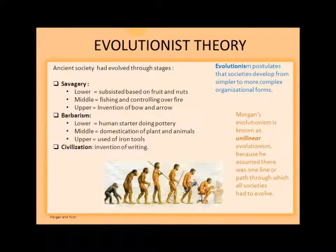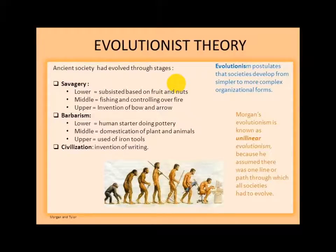Evolutionist theory postulates that societies developed from simpler to more complex organizational forms. The impact of 19th century evolutionism on modern anthropology lies in the grand comparative projects. Ancient Society is a key example of 19th century evolutionism. According to Morgan, human society had evolved through a series of stages, which he called savagery, barbarism, and civilization.